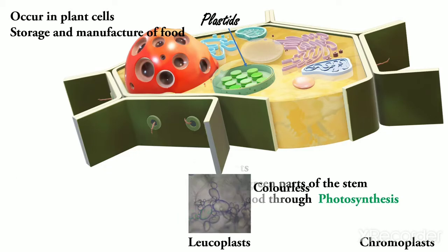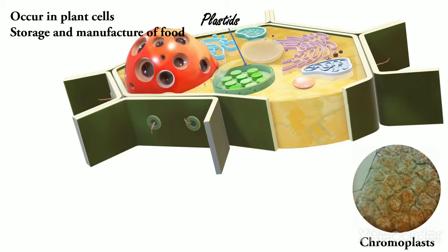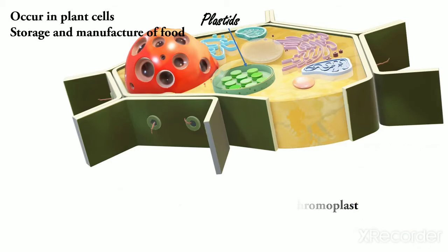Second, Leucoplast. They are colorless plastids and found in the storage organ. Examples: potato and onion. Third, Chromoplast. These are colored plastids other than green plastids. The color of the flower and fruits are due to Chromoplast. Function of Plastids: Their main function is to manufacture and storage of food.